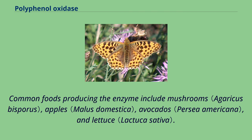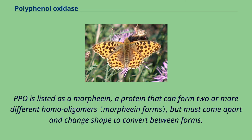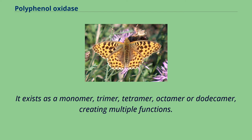Common foods producing the enzyme include mushrooms, apples, avocados, and lettuce. PPO is listed as a morphin, a protein that can form two or more different homo-oligomers, but must come apart and change shape to convert between forms. It exists as a monomer, trimer, tetramer, octamer or dodecamer, creating multiple functions.